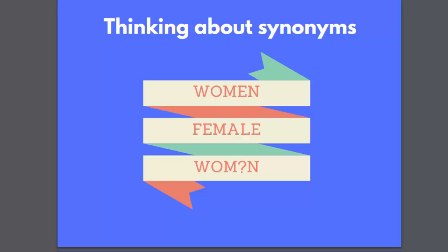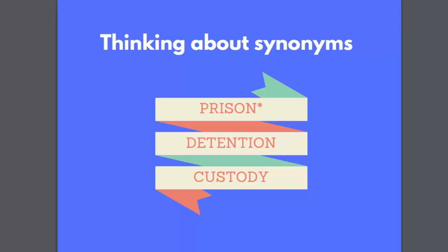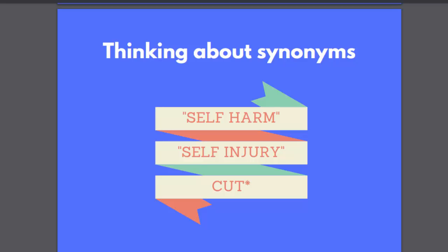Now we need to take these key concepts and think of other words which mean the same thing, which an author may have used when writing a book or article. Starting with the keyword 'woman', one obvious synonym is 'female', and it's important to remember that not all databases search for the plural automatically, so you may need to search for 'women' too. Useful synonyms for prison are 'custody' or 'detention'. For the key concept 'self harm', synonyms could be 'self injury' and 'cutting', or even better we can use 'cut*' to find all variations of the word. If you have trouble thinking of synonyms, you can always brainstorm with a friend, use a thesaurus, or read a few articles on the topic for inspiration.